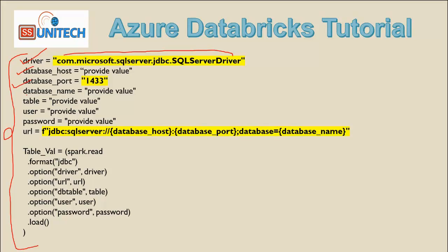Then we have to add the database name, then the table name that we want to access. After that we have to add the user ID and password. Inside the URL we will be adding the database host, which we are putting into a variable.